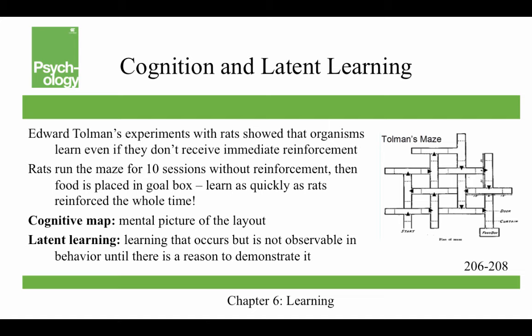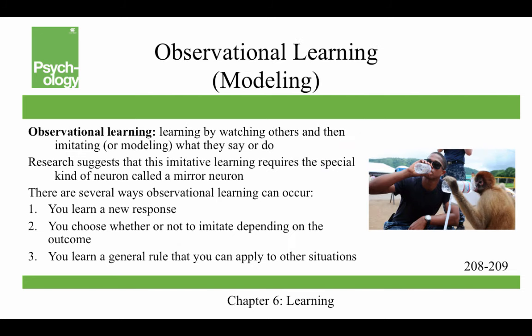As a human example of latent learning — maybe you don't know how to drive a manual transmission, but you've seen people do it. Then if you're in an emergency situation where you had to drive a manual transmission to get someone to the hospital, you'd probably manage it. Observational learning is learning by watching others and then imitating or modeling what they say or do. The individual performing the imitated behavior is called the model — in a textbook picture, an airman drinking from a water bottle is the model, and his behavior is being imitated by a spider monkey.